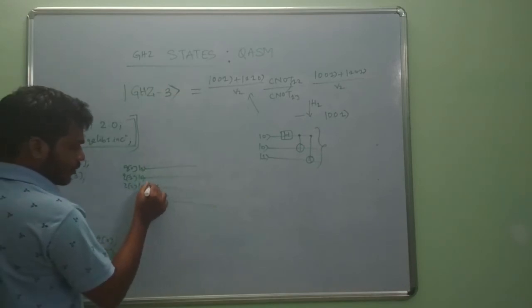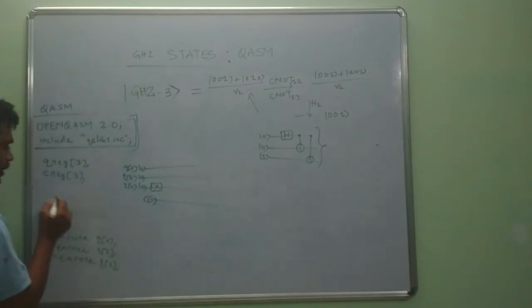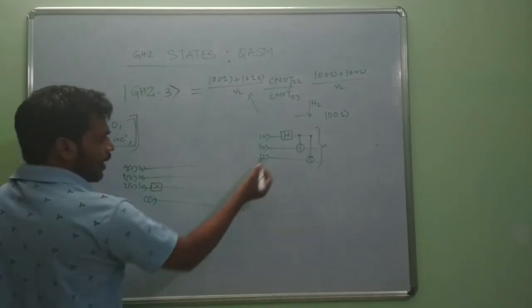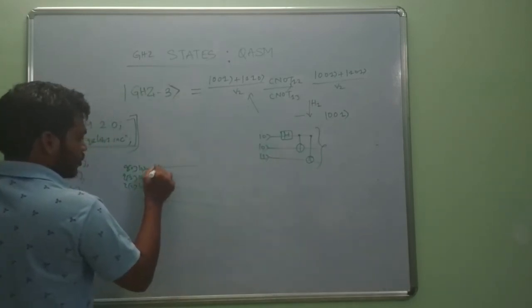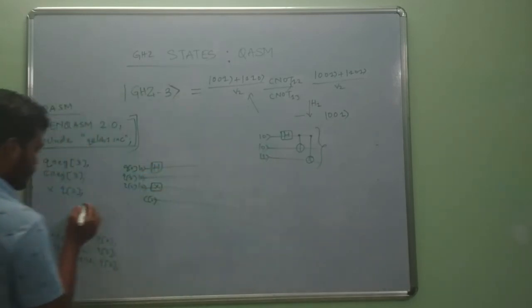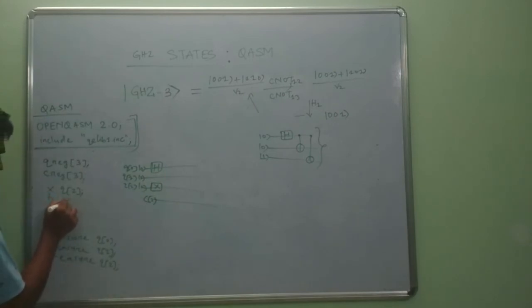Write down X of q2. Now apply Hadamard gate on the first qubit. So Hadamard on the q0 qubit.